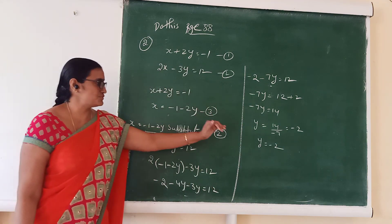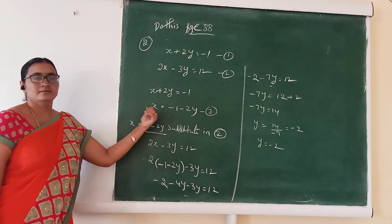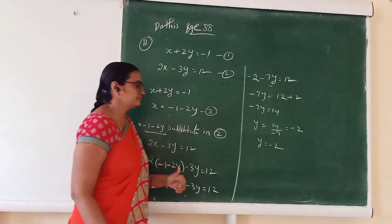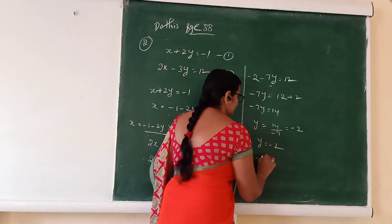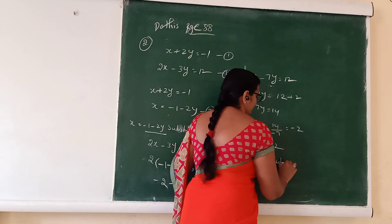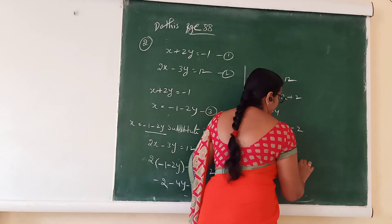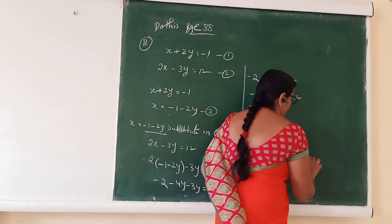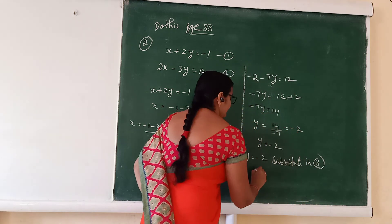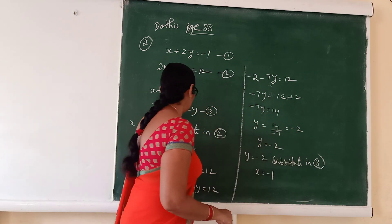Now substitute y equal to minus 2 back into equation 3 to find x. Then x equal to minus 1 minus 2 times (minus 2).